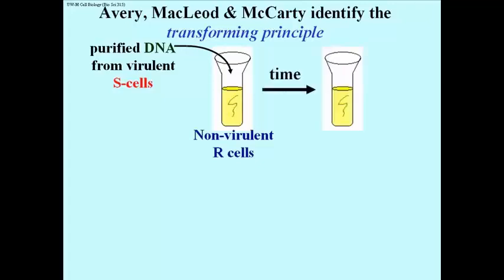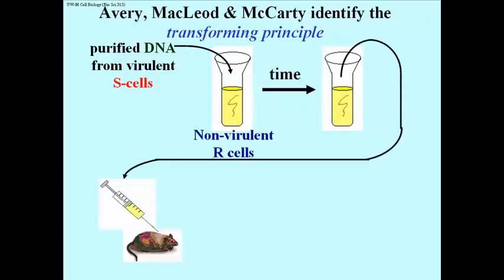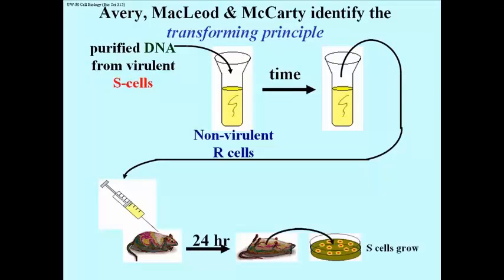Avery, MacLeod, and McCarty actually identified what came to be called the transforming principle, that molecule which causes the genetic transformation. So what they did was they purified DNA from virulent cells, mixed them in a tube with non-virulent R cells, waited for a time, and then took the resulting cells and injected them into a mouse, and lo and behold, the mouse died. From which you might conclude that DNA from virulent cells was the transforming principle. In fact, you could take cells out of that dead mouse and grow them on agar, as I indicated before.